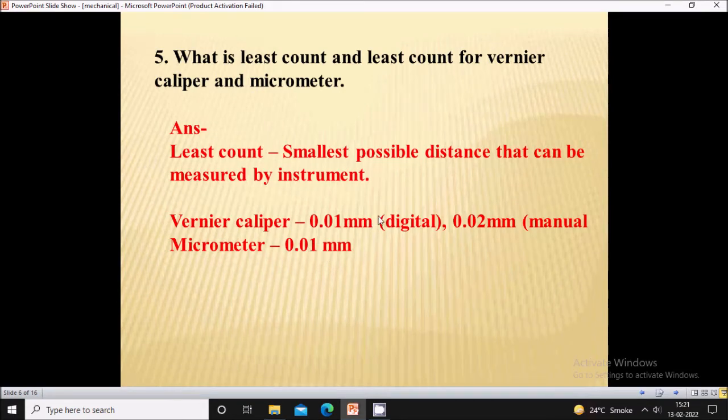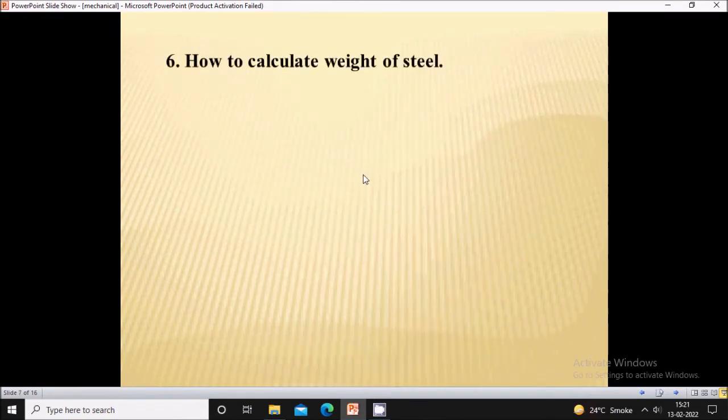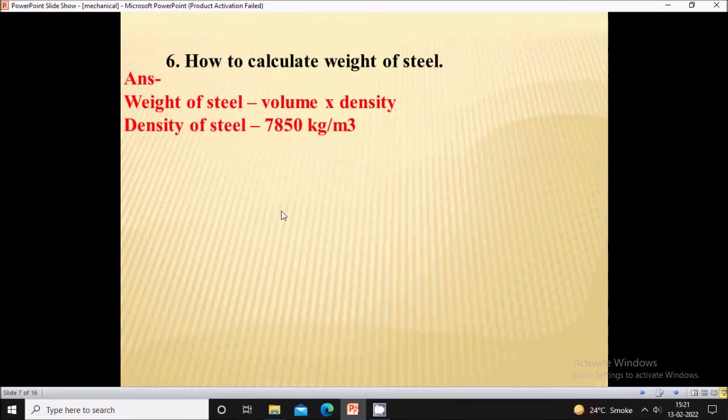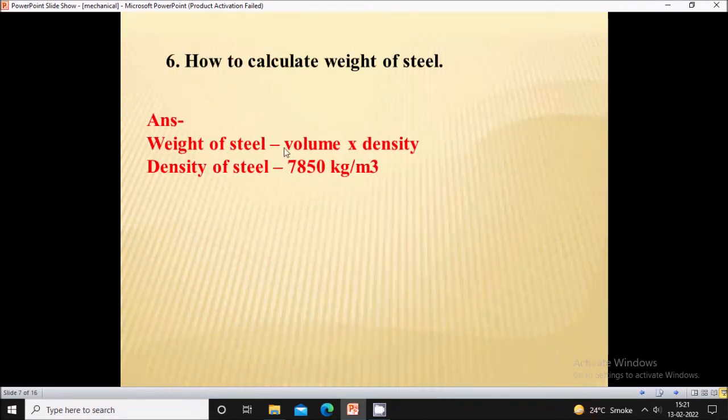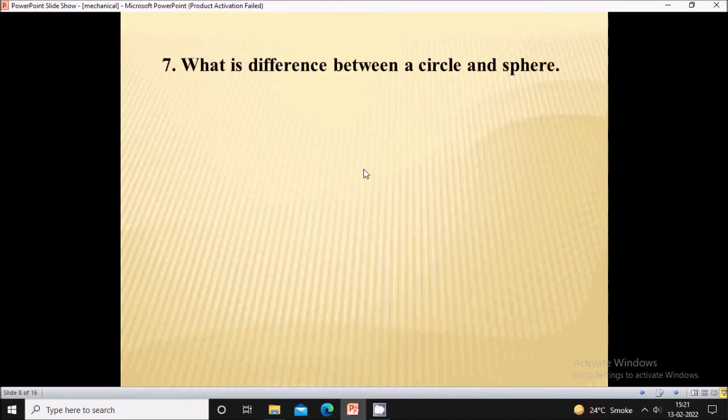Sixth question: how to calculate the weight of steel? The weight formula is volume times density. Volume is area times length, and the density of steel is 7,850 kg per meter cube.